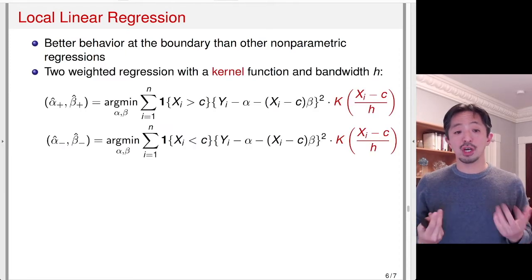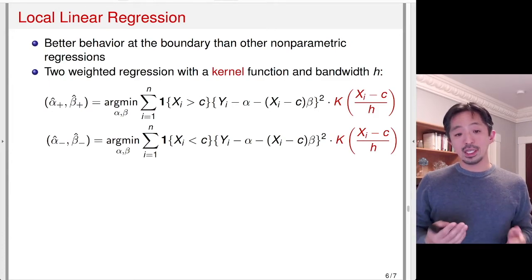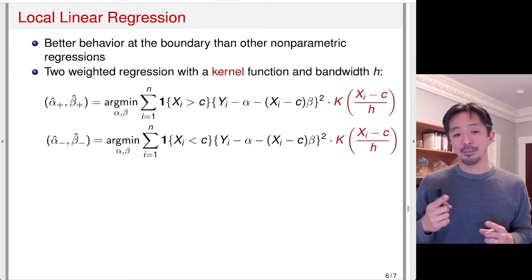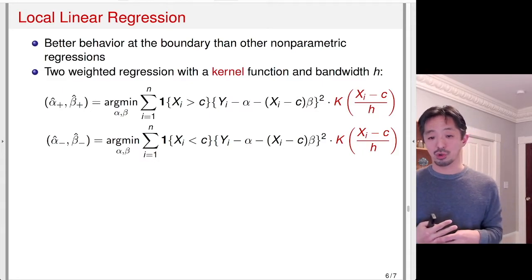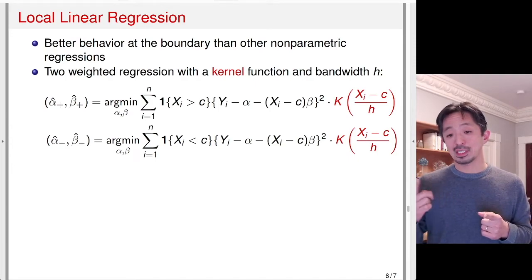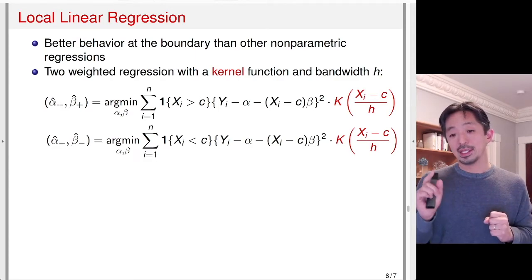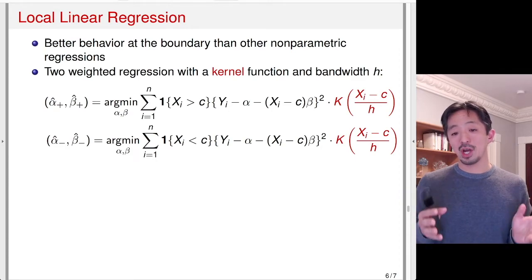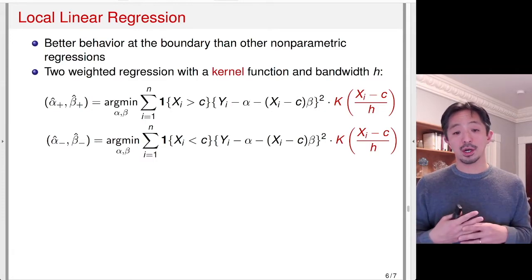What is local linear regression? It turns out it's just weighted least-squares regression instead of simple least squares. There are two regressions, one for the treatment group and one for the control group. I'll use alpha-hat and beta-hat as the least-squares estimates, where plus and minus represent the ones from the treatment group and control group respectively. X is standardized by subtracting the threshold C, so that when predicting at the threshold, we don't have to worry about beta — the estimate is going to be alpha-hat.